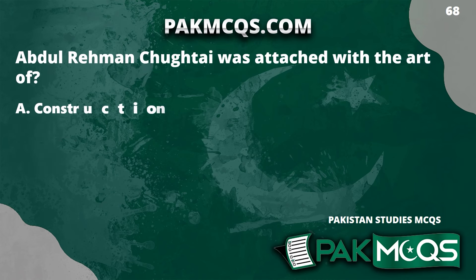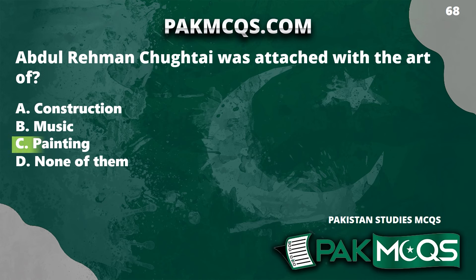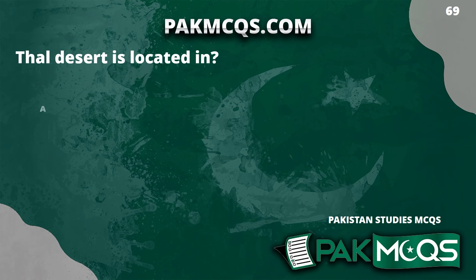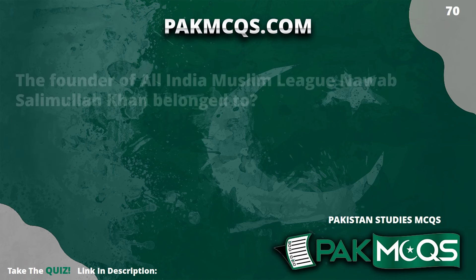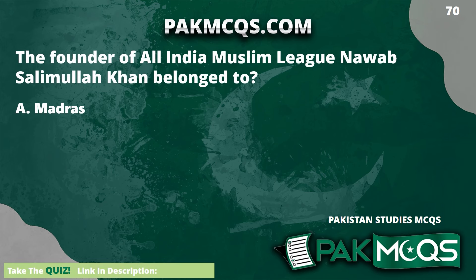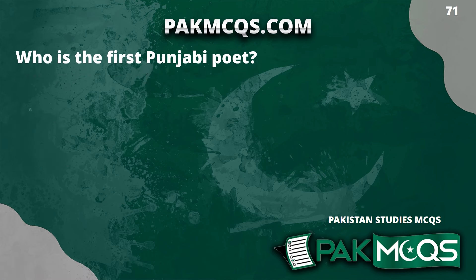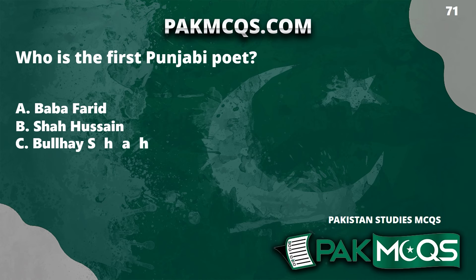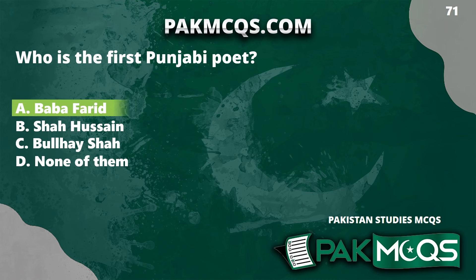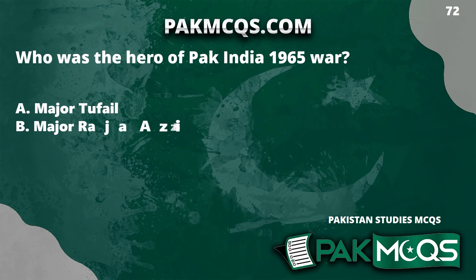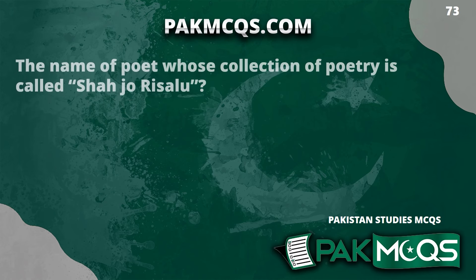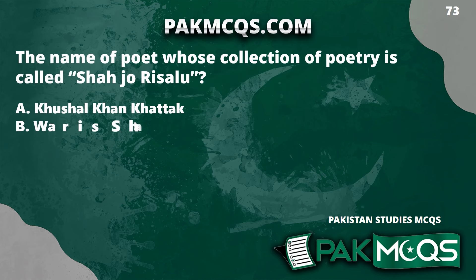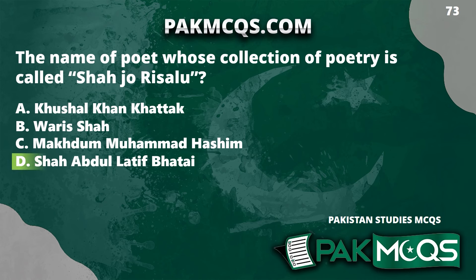Abdul Rahman Chughtai was attached with the art of painting. Thal Desert is located in Punjab. The founder of the All India Muslim League, Nawab Salimullah Khan, belonged to Dhaka. Who is the first Punjabi poet? Baba Farid. Who was the hero of the Pakistan-India 1965 war? Major Raja Aziz Bhatti. The name of the poet whose collection of poetry is called Shah Jo Risalo is Shah Abdul Latif Bhatai.